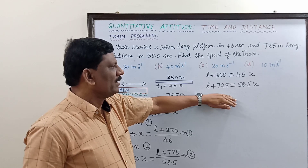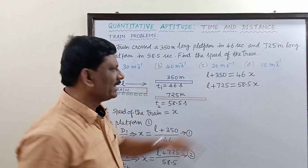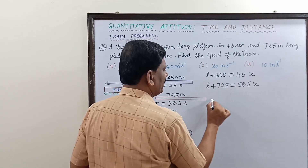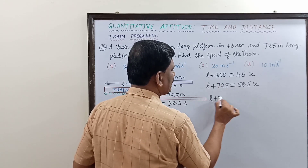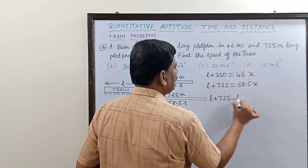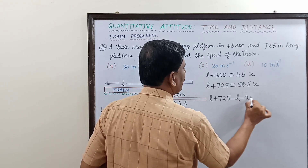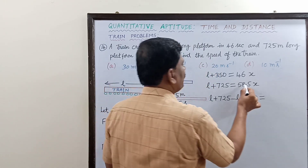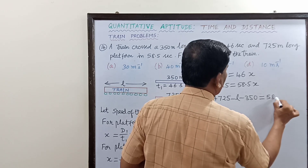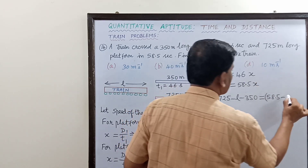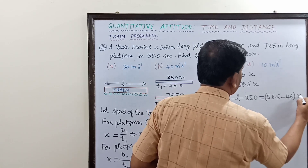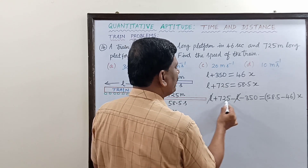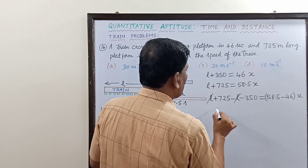Subtracting equation 1 from equation 2: the L terms cancel out on the left side, leaving 725 minus 350. On the right side we get 58.5X minus 46X. So the left hand side becomes 375.